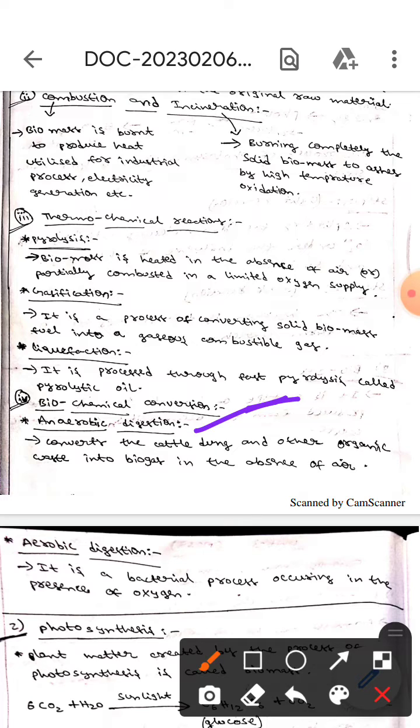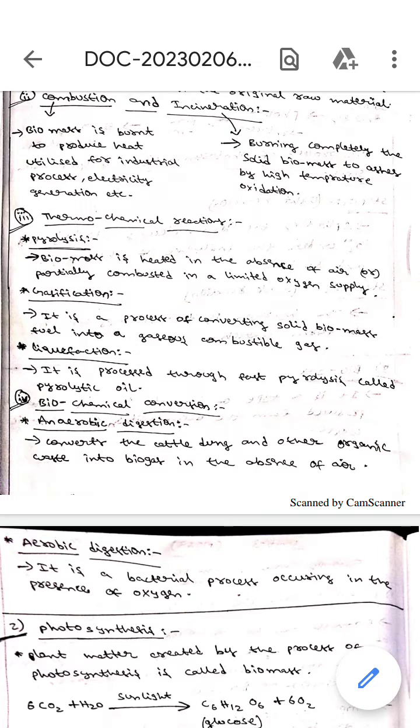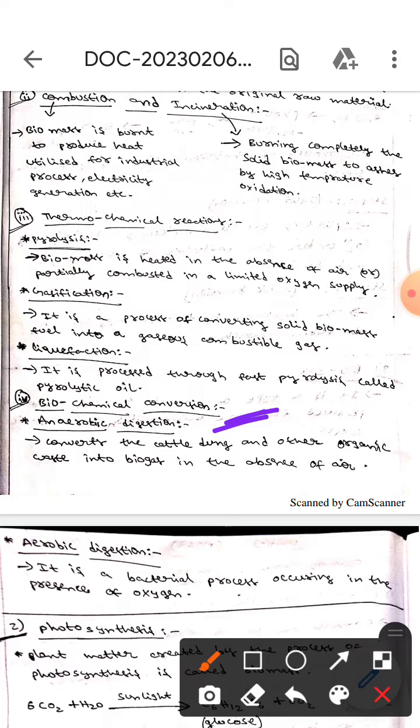Whereas the next one is biochemical conversion. There are two types: anaerobic digestion and aerobic digestion. The first one is anaerobic digestion - here it converts cattle dung and other organic waste into biogas in the absence of air.